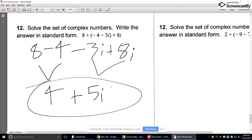Number 12 is just an addition problem. Addition problems don't change any signs. So I have nothing to distribute. So 8 plus negative 4 is just like saying 8 minus 4. Negative 3i plus 8i. You can ignore the parentheses. So 8 minus 4 is 4. Negative 3i plus 8i, that's like 8i minus 3. That's 5i. That's a positive 5i. So I'll put plus 5i.